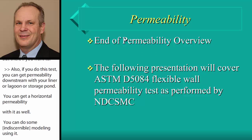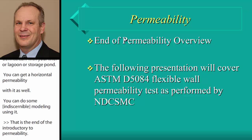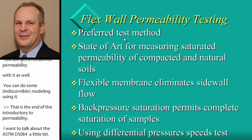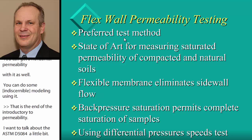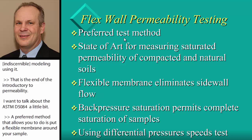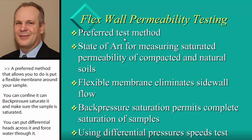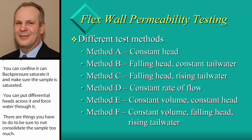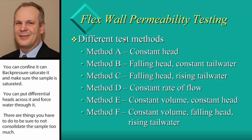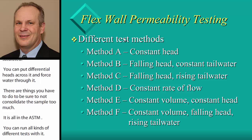The D5084 flex wall permeameter is the preferred, state-of-the-art method. It places a flexible membrane around the sample to confine it, allows back-pressure saturation to ensure full saturation, and applies differential heads to force water through. Care must be taken not to consolidate the sample excessively — all spelled out in the ASTM. The preferred approach here is Method C: falling head, rising tail water, which best models liner conditions.